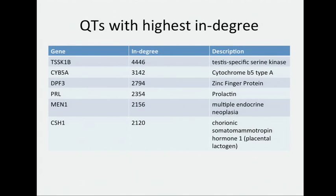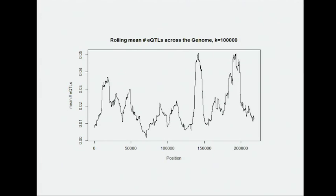Here are the quantitative traits with the highest in-degree — we see some interesting results. Prolactin is known to play a role in breast biology, and Men1 has been implicated in a variety of cancers. Another way to visualize this is by taking a rolling mean of EQTLs across the genome, starting with chromosome 1 and going all the way to the X chromosome.